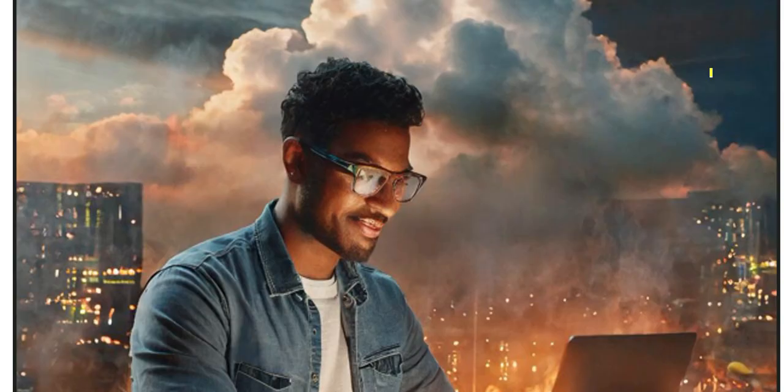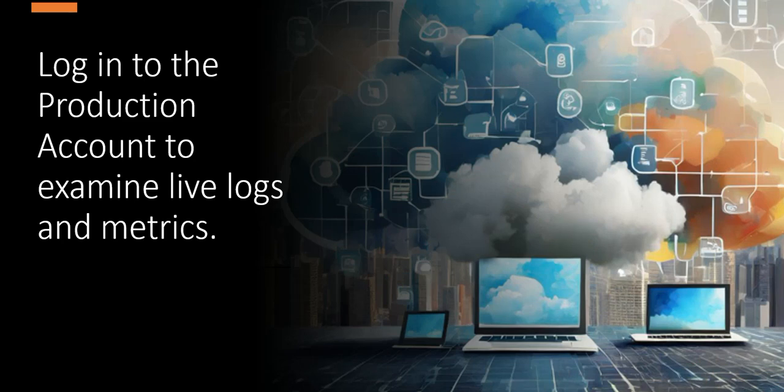How will they proceed? They will first go to production and check what the issue is. They will log into the production account, examine the live logs and metrics, and try to analyze the problem. Once that is done, they will log off from production. This is the crucial part — they log off.